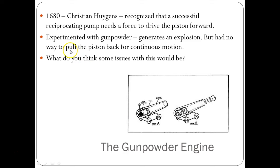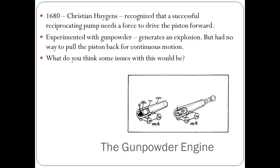In 1680, Christian Huygens recognized that a successful reciprocating pump needs a force to drive its piston forward — that is the basis of our internal combustion engine, the fact that pistons can move back and forth. Without that idea, we wouldn't have the engines we have today. Huygens started experimenting with gunpowder to move a piston back and forth. However, gunpowder generates an explosion but had no way to pull the piston back for the continuous motion we need. There would also be a lot of pressure and safety issues associated with this.